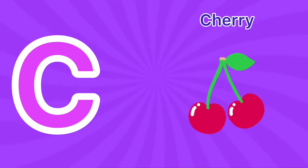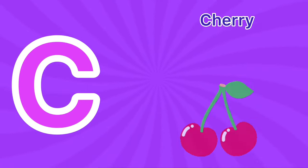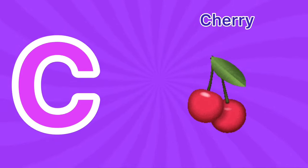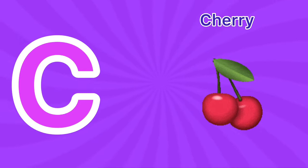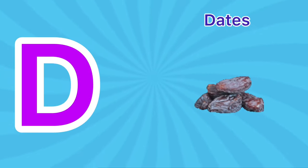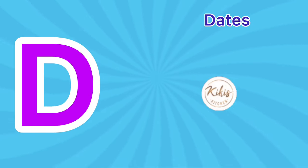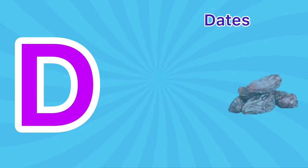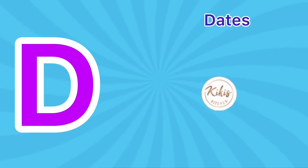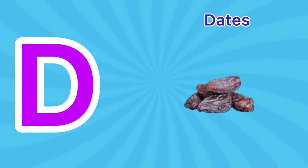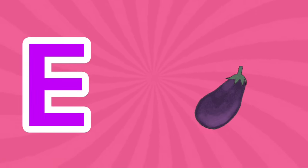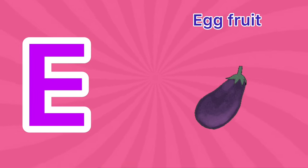C is for Cherry. Ch-Ch-Ch. Cherry. C is for Cherry. Ch-Ch-Ch. D is for Date. D-D-D. Date. D is for Date. D-D-D.